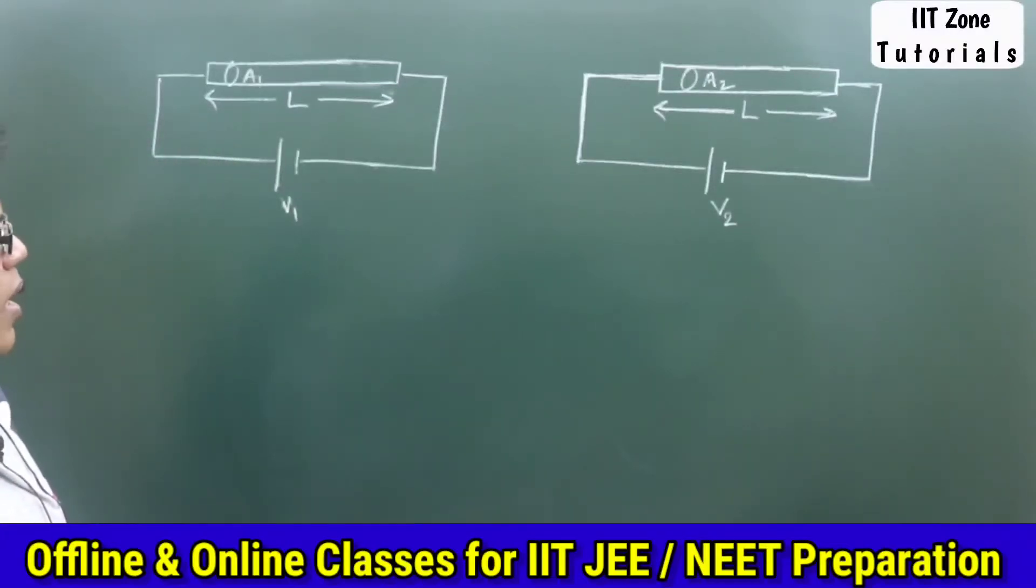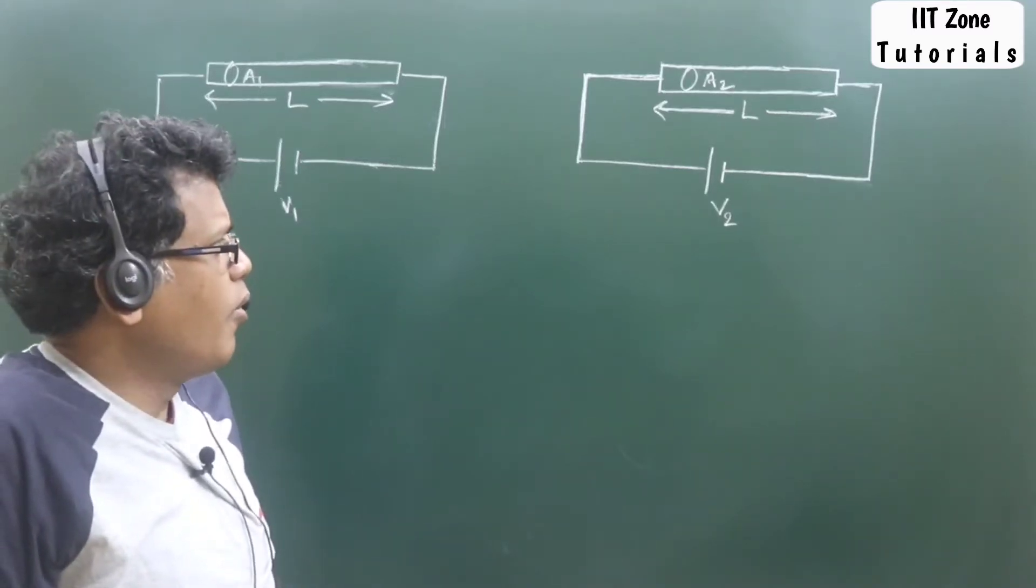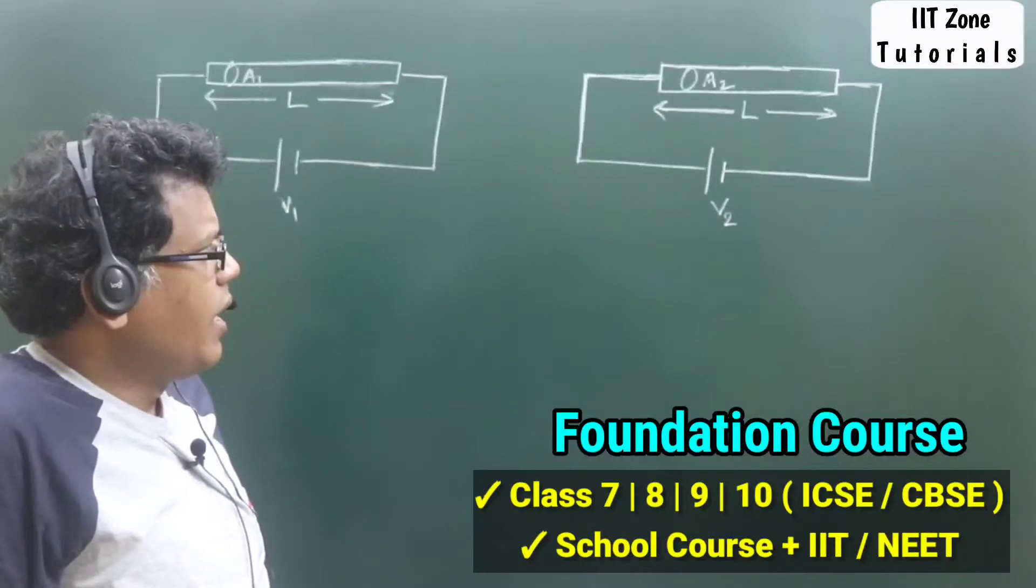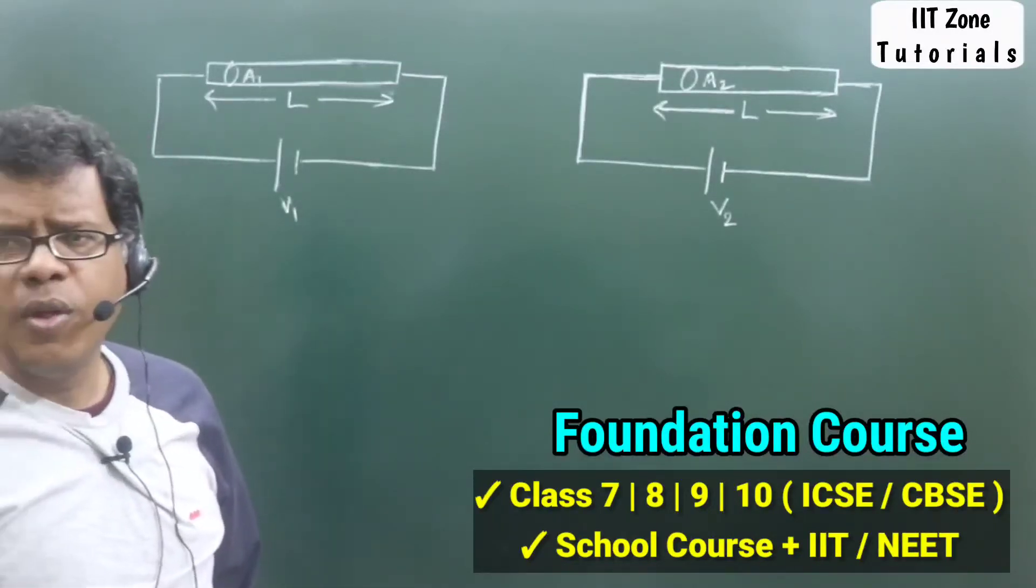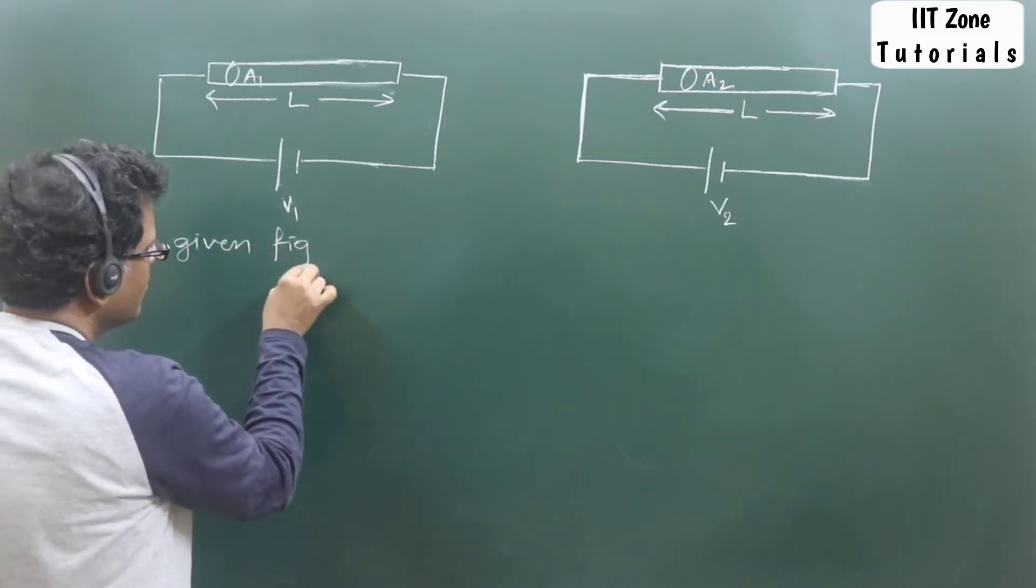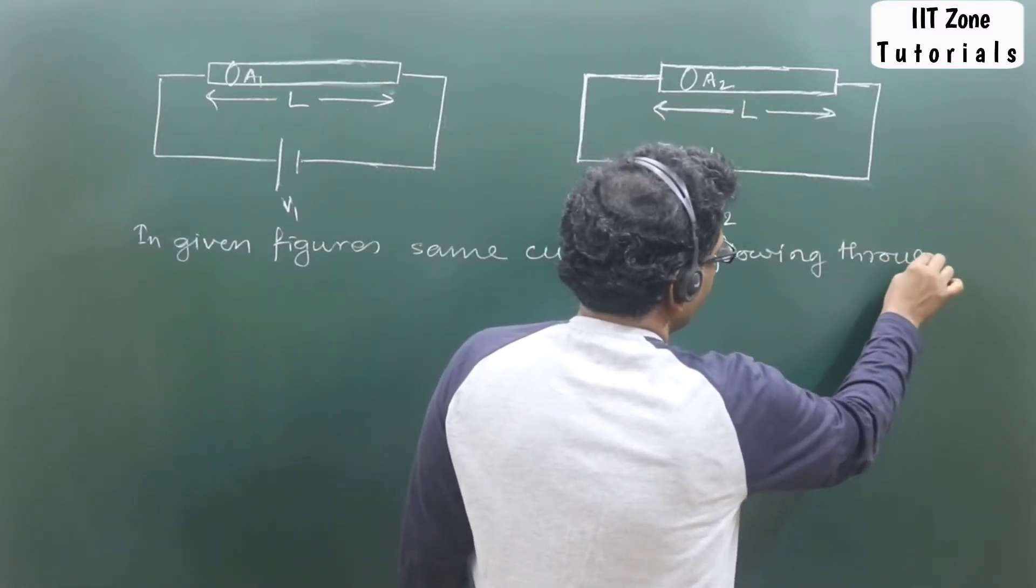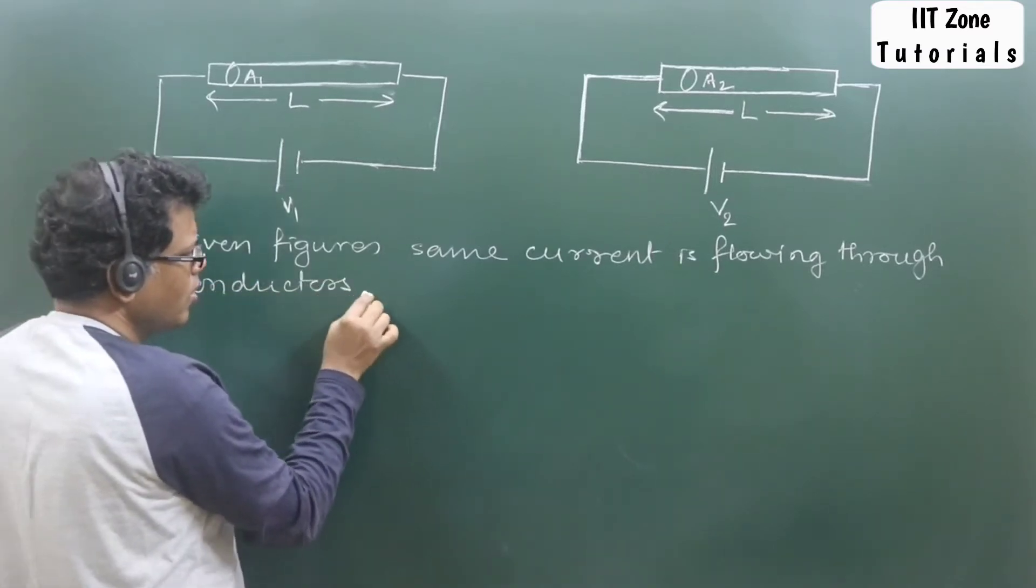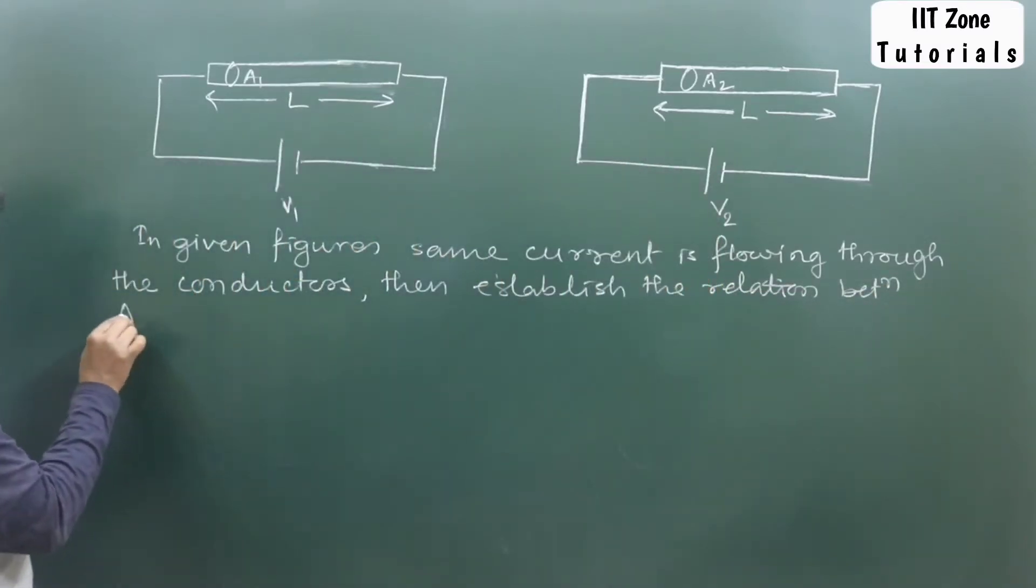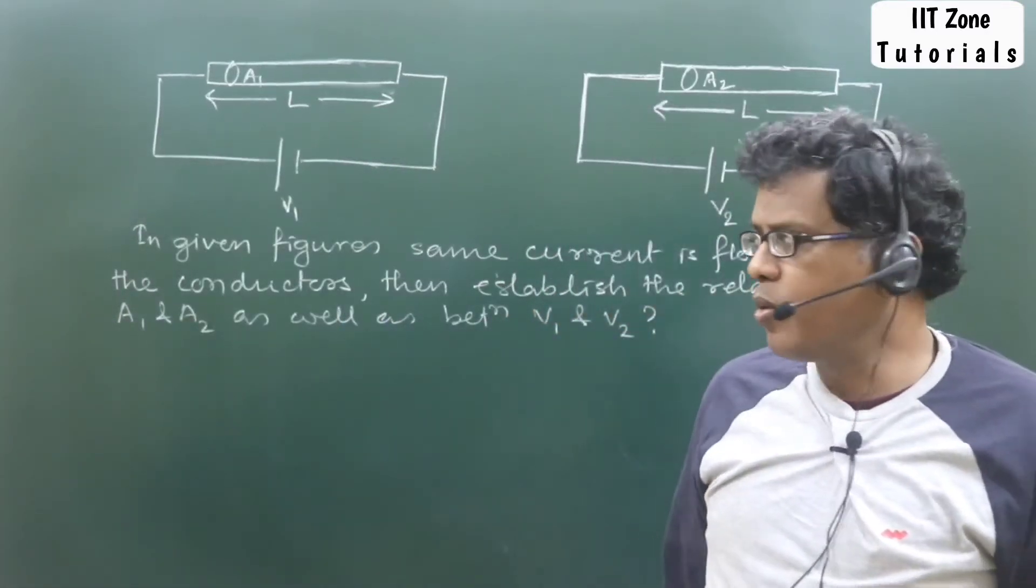So now my question is: in order to have the same current flowing through the conductors, what will be the relation between A1 and A2, and that of V1 and V2?